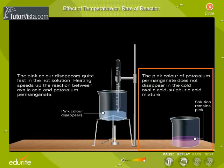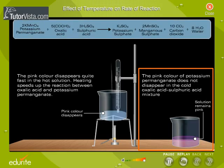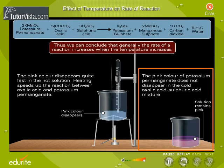As the pink colour of potassium permanganate does not disappear in the cold oxalic acid-sulphuric acid mixture but disappears quite fast in the hot solution, it can be said that heating speeds up the reaction between oxalic acid and potassium permanganate. The chemical equation of the reaction is depicted here. Thus we can conclude that generally the rate of a reaction increases when the temperature increases.